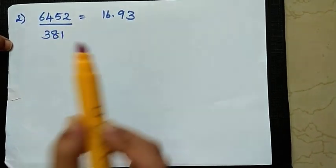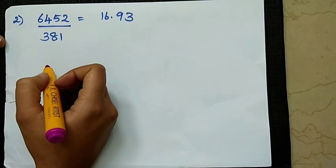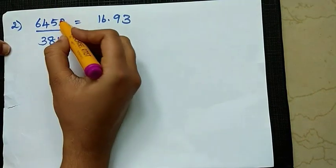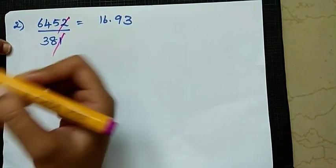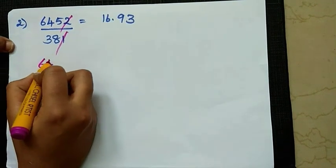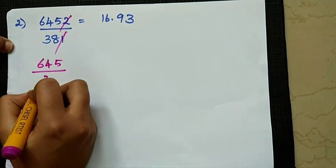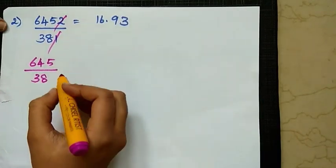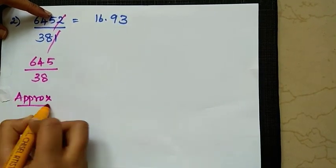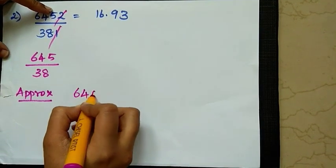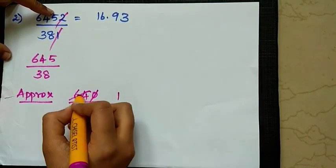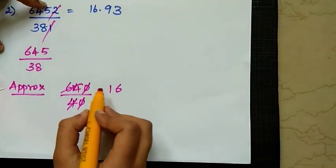Let's take another example: 6452 by 381. We will cut to 2 digits. The approximate value is 640 by 40. So 64 by 4 equals 16. This is the approximate answer.